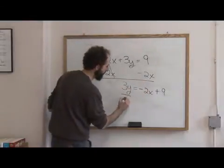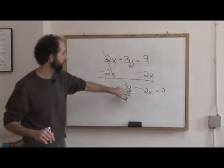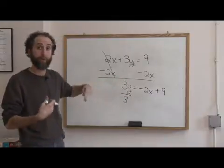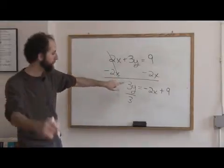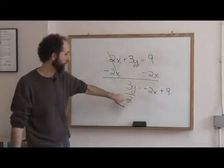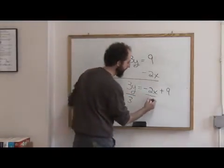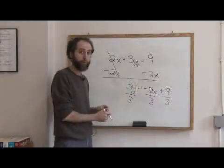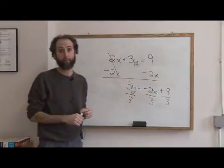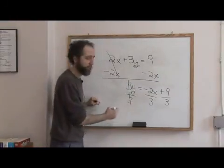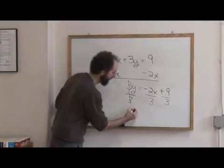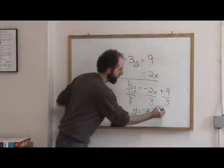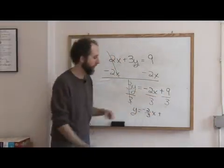Now I'm going to divide both sides by 3. Why? Because this is 3y — it's like saying 3 times y. When you want to eliminate that, you do the opposite. The opposite of addition was subtraction; the opposite of multiplication is division, so I divide by 3. I need to do that to everybody — whatever you do to one side, you have to do to both sides of the equation, and to all members of that side when you're dividing. 3 over 3 cancels, giving y alone equals negative 2 thirds x plus 9 over 3, and 9 divided by 3 is 3.